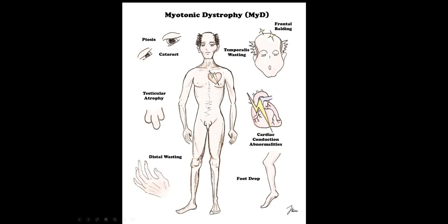Non-neurologic manifestations of myotonic dystrophy include ptosis, cataracts, early frontal balding, temporalis wasting, testicular atrophy, other endocrine issues, distal weakness in hands and feet, and cardiac conduction disturbances. If a patient with myotonic dystrophy has syncopal episodes, they likely need a pacemaker due to these conduction abnormalities.